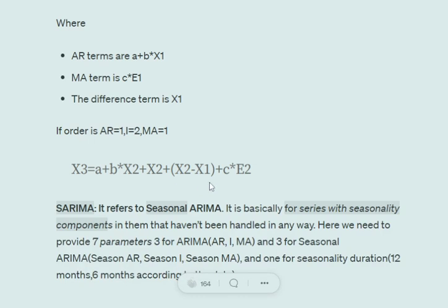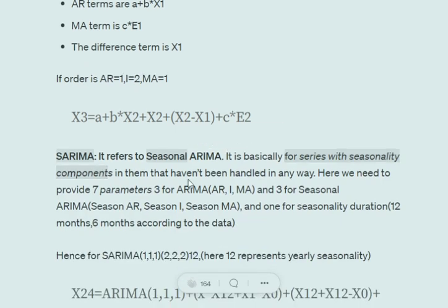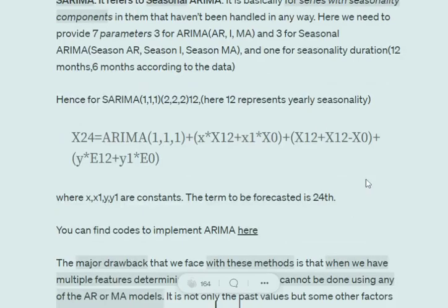Now in case of SARIMA, SARIMA incorporates 2 ARIMA models basically, which helps us in incorporating seasonality present in the dataset. So here we need to provide 7 parameters. 3 for normal ARIMA model, 3 for seasonal ARIMA model and 1 for seasonality.